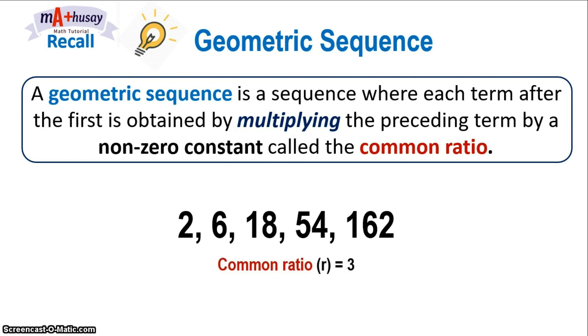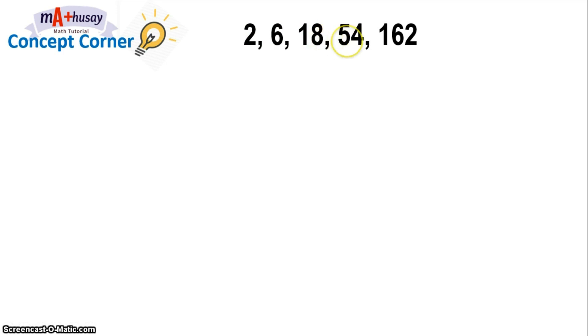We will use this analogy to find the nth term or the general term of any geometric sequence. Consider the sequence 2, 6, 18, 54, and 162. Note that the common ratio is 3 because 2 times 3 gives you 6, 6 times 3 gives you 18, 18 times 3 gives you 54, and so on. We will rewrite each term in the sequence in two different ways: in factored form and in exponential form.